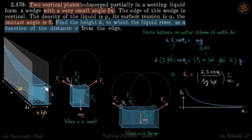Let's write the free body diagram of that element. This surface will experience a force f2 in one direction, and then this surface will have the same force f2 downwards. They are the same because the surface is continuous, so the two forces are at 180 degrees to each other, and since the lengths of both surfaces are almost the same, the surface tension forces are equal.